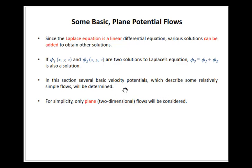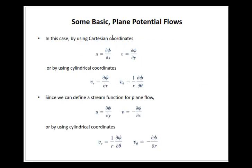We will not be dealing in three dimensions — we will ignore the third dimension. In two dimensions, u can be represented as ∂φ/∂x and v as ∂φ/∂y. If you remember, for the stream function, u is represented as ∂ψ/∂y and v as minus ∂ψ/∂x.